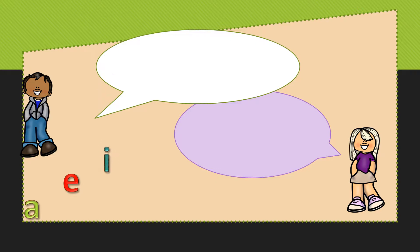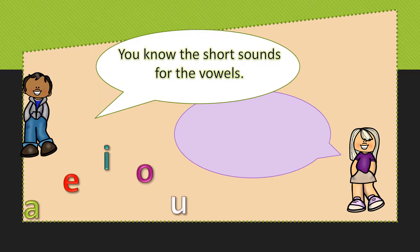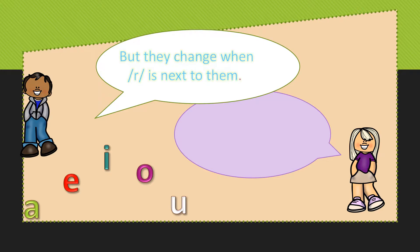You know the vowels A, E, I, O, and U. Their short sounds are A, E, I, O, and U, but they change when an R is next to them.